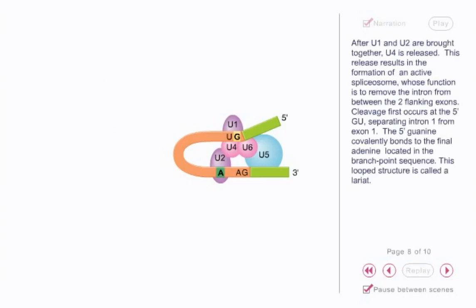After U1 and U2 are brought together, U4 is released. This release results in the formation of an active spliceosome, whose function is to remove the intron from between the two flanking exons. Cleavage first occurs at the 5' GU, separating intron 1 from exon 1. The 5' guanine covalently bonds to the final adenine located in the branch point sequence. This looped structure is called a lariat.